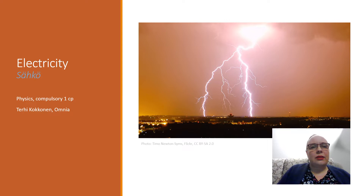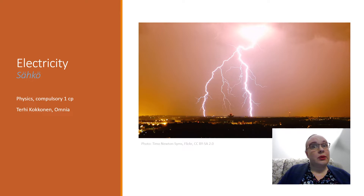18th century scientists started experimenting on lightning. The fundamental nature of electricity was not yet understood, but static electricity was a phenomenon people had observed and described. Benjamin Franklin started to think that lightning and frictional electricity were probably somehow identical. You have probably heard of his famous, wildly dangerous, kite experiment that proved the electric nature of lightning.